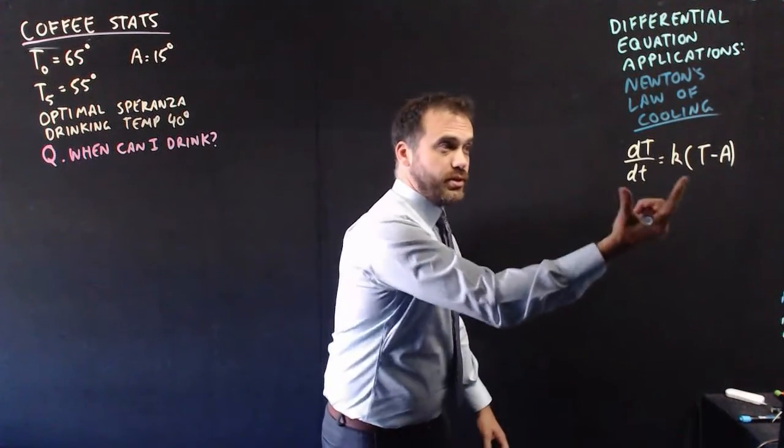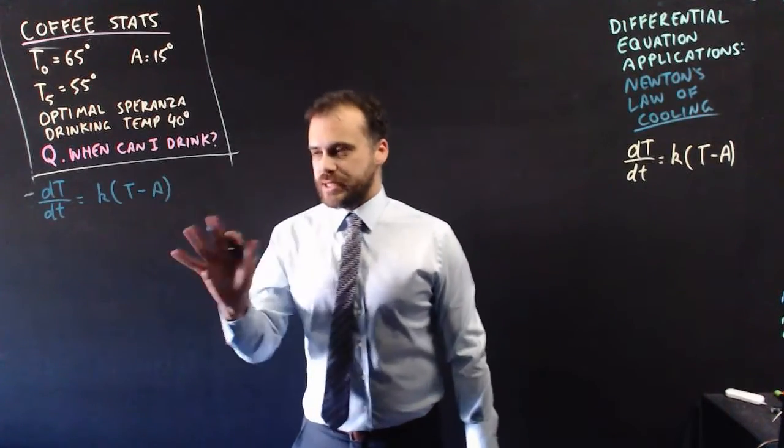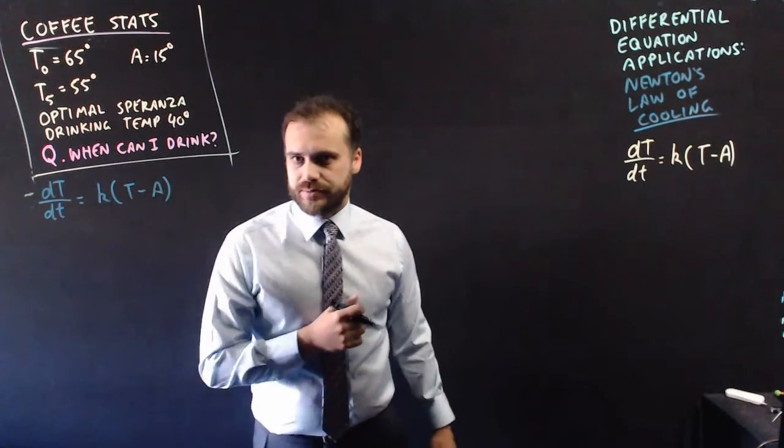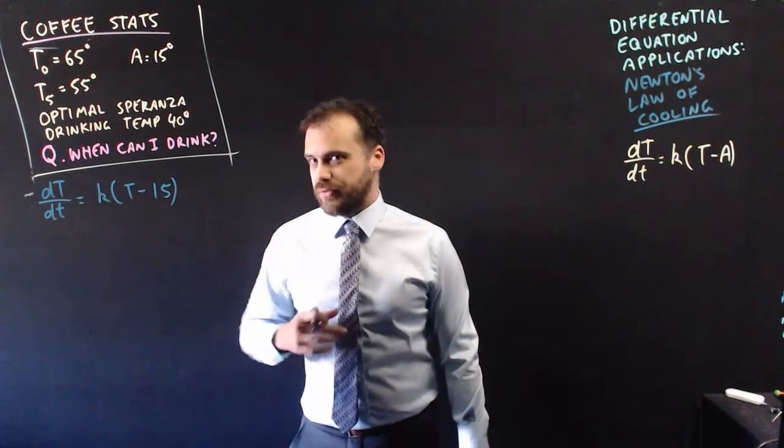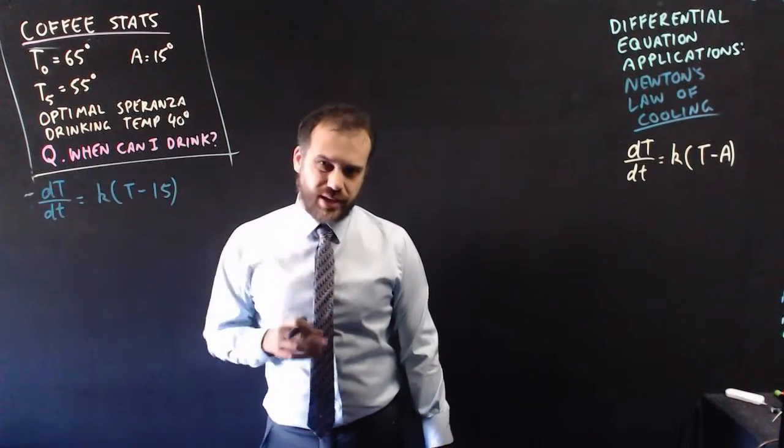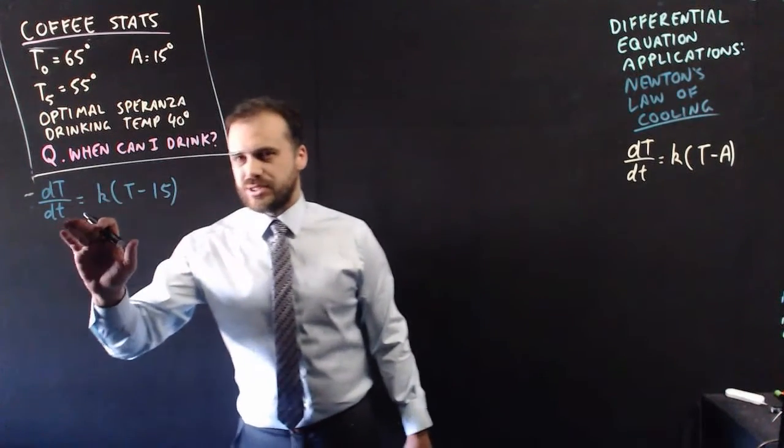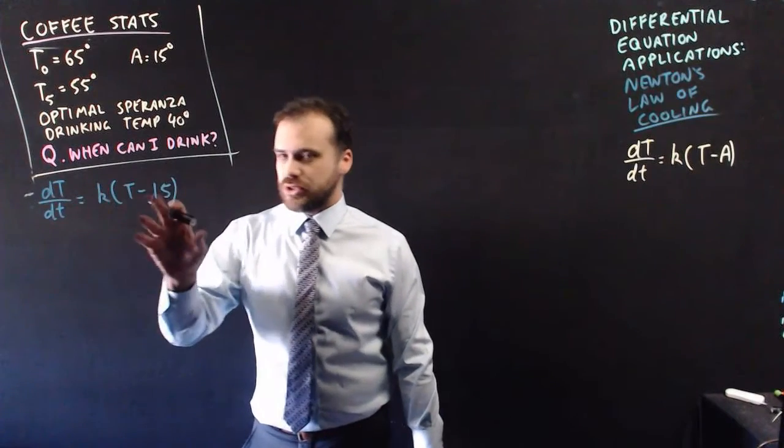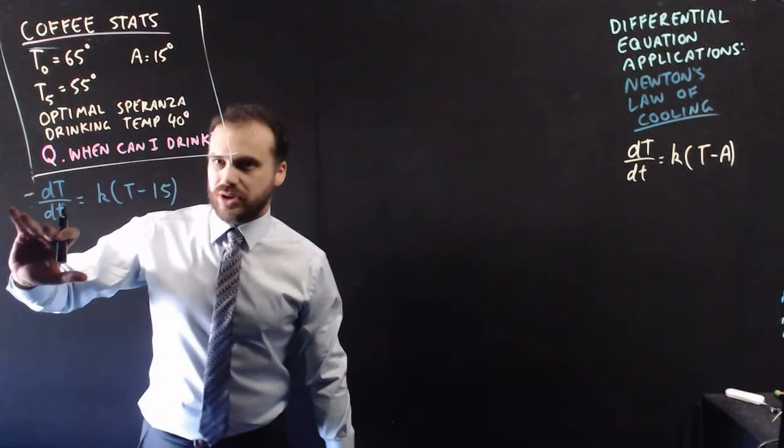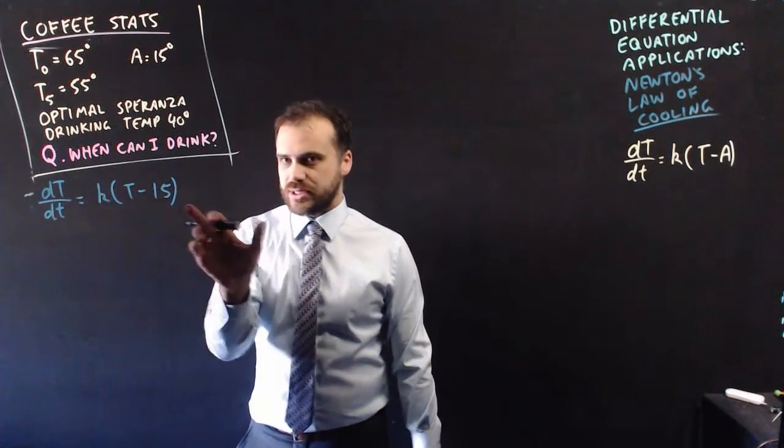We start with our differential equation, but we actually already know one piece of this puzzle. We know our ambient temperature, 15 degrees. The next thing we want to do is solve this differential equation. Note, k is a constant. We'll have to figure that out at some point. t is temperature and lowercase t is time. Because this equation is in terms of uppercase T, I really need to get this side in terms of lowercase t.